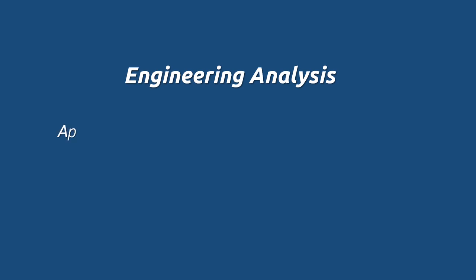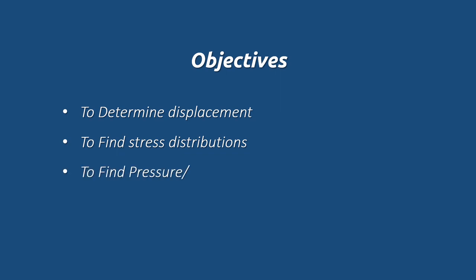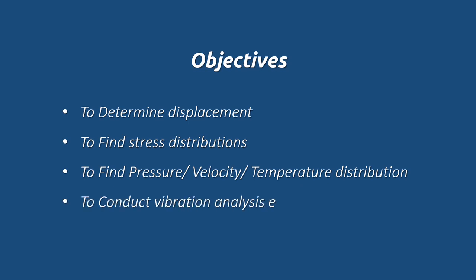Engineering analysis is used to find any property of a system with the help of scientific and analytic principles. For example, finding the displacement or deformation of a loaded bar, finding a stress developed in a member, or finding the pressure or velocity distribution of a fluid, or finding the temperature at any point on a heated element or conducting a vibration analysis.